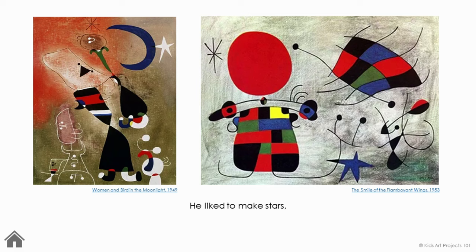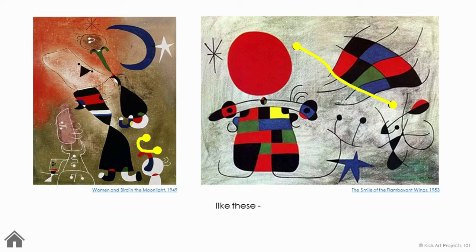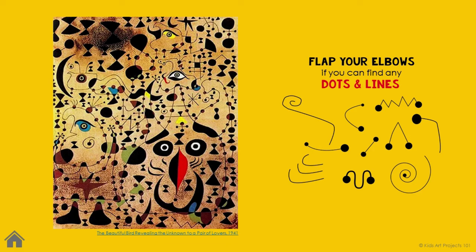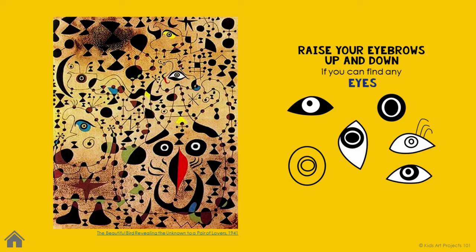He also liked to make stars — like these. He also liked to make lines with dots at the ends — like these. Flap your elbows if you can find any dots and lines in this painting. There are so many. He liked to make eyes, too — like these. Raise your eyebrows up and down if you can find eyes in this painting. There are so many.